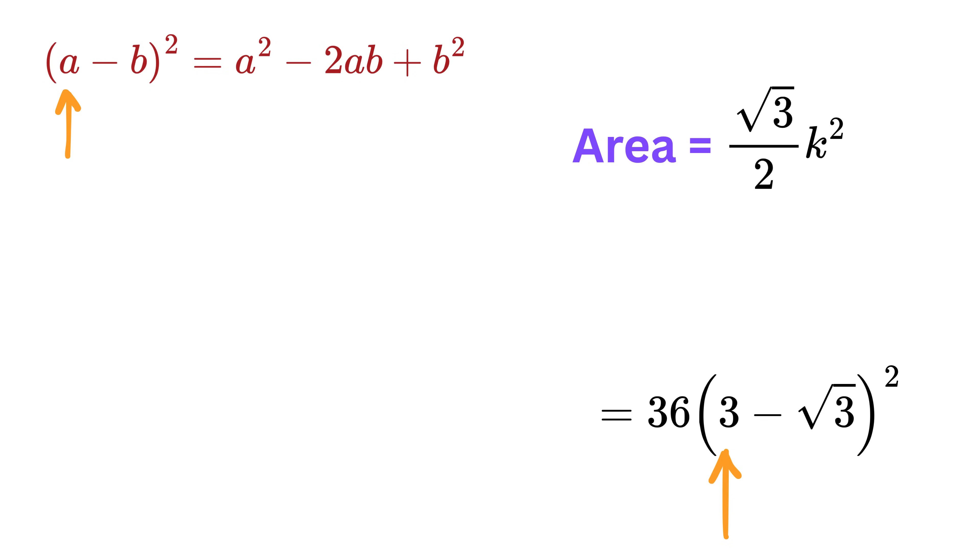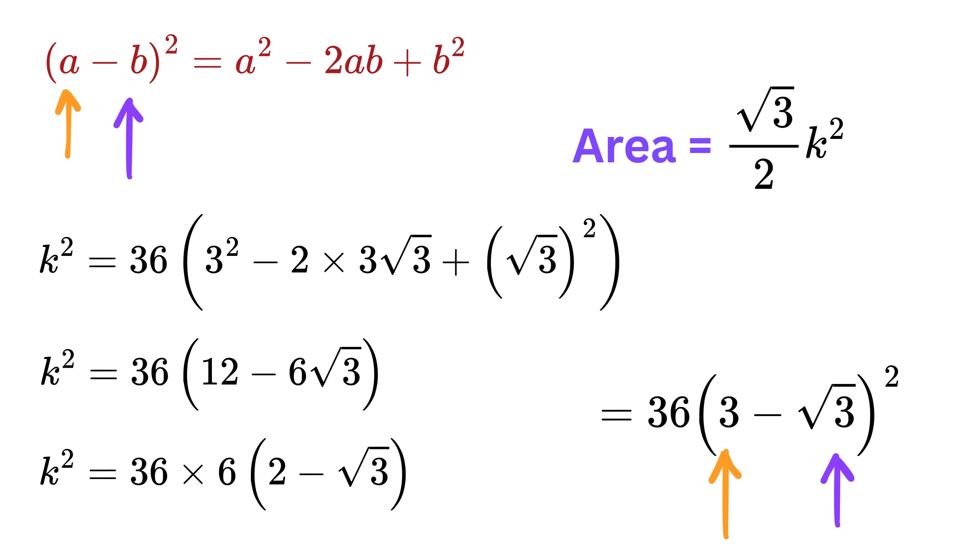Here a is 3, and b is root 3. So k squared equals 3 squared minus 2 times 3 times root 3 plus root 3 squared. This gives 9 plus 3 minus 6 root 3, or 12 minus 6 root 3. Take 6 as common, and we get 6 times 2 minus root 3. So k squared equals 216 times 2 minus root 3.